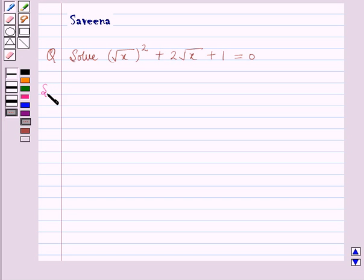Now we will start with the solution. We have to solve (√x)² + 2√x + 1 = 0.